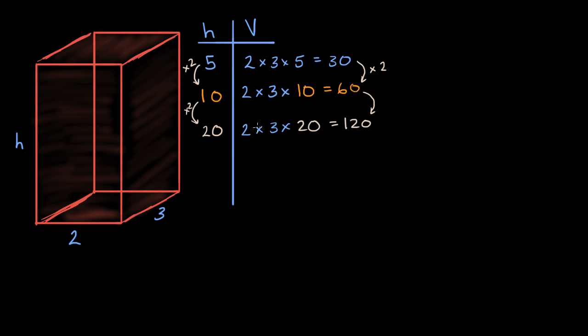So once again, if you double one of the dimensions, in this case the height, it doubles the volume. And you could think of it the other way. If you were to go from 20 to 10, so if you halve one of the dimensions, it halves the volume. You go from 120 to 60.